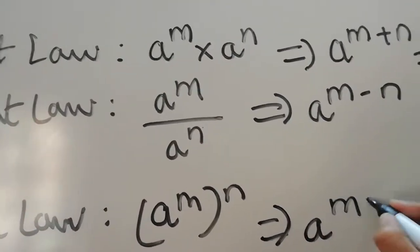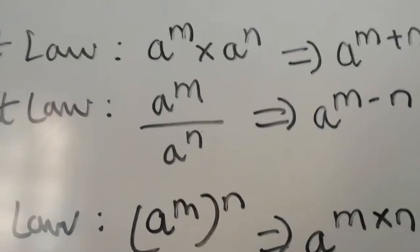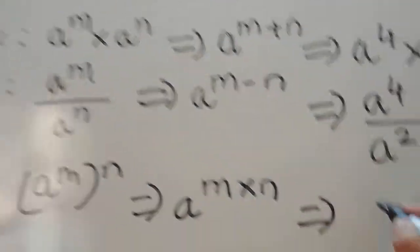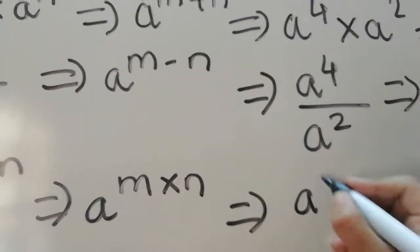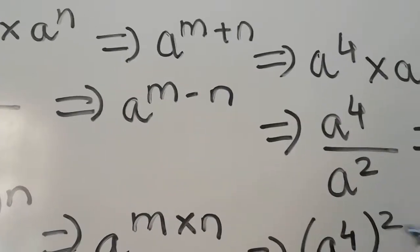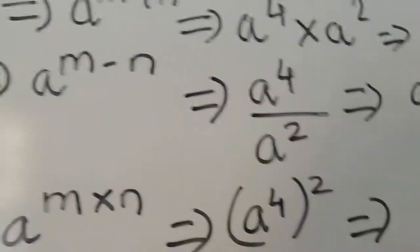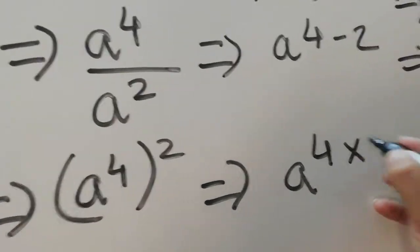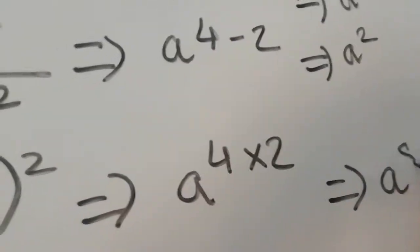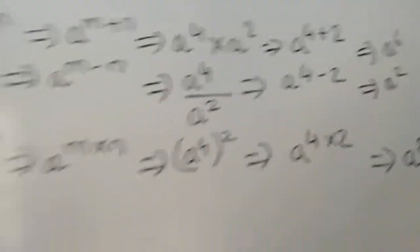So the result is a raised to M into N. For example, if it is a raised to 4 with the bracket raised to 2, then your answer is a raised to 4 into 2, which is a raised to 8.